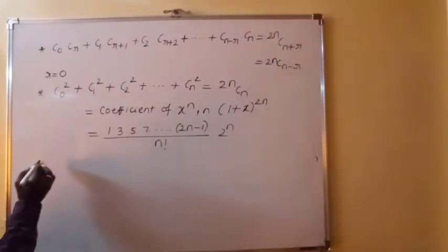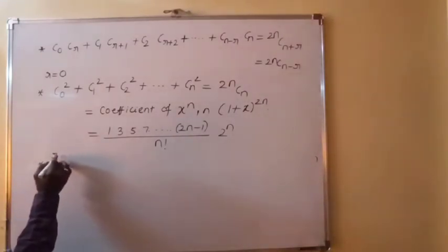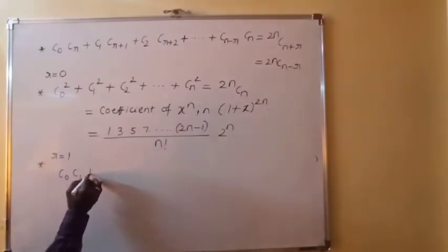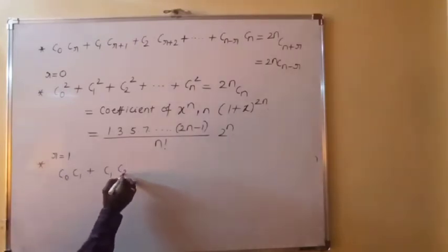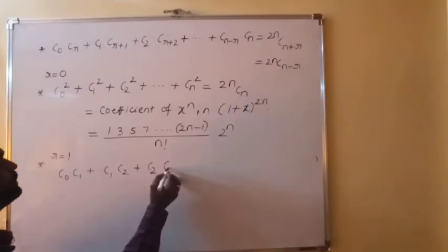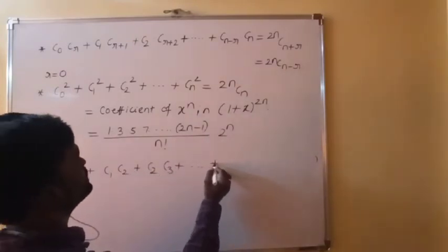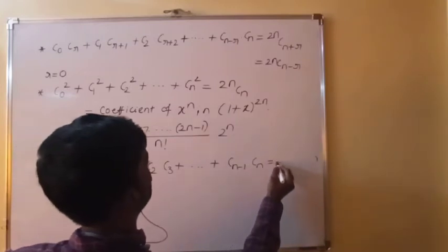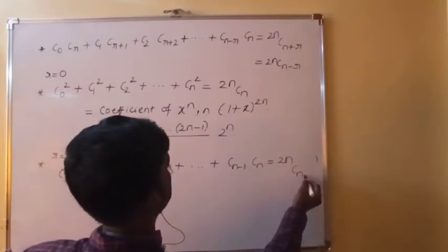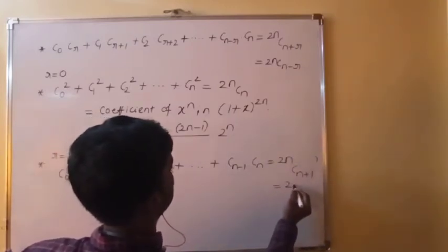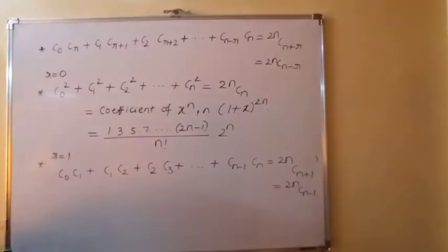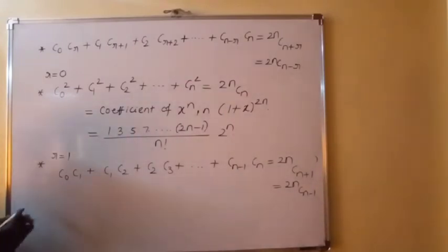Next, put R = 1. Then you get C0·C1 + C1·C2 + C2·C3 + ... + CN-1·CN = 2NCN+1, which is same as 2NCN-1. Try to remember these two results. I am going to prove one more result also.